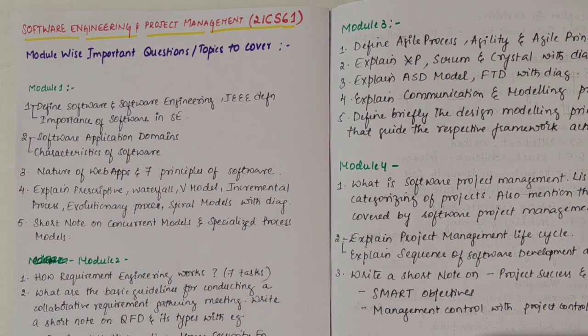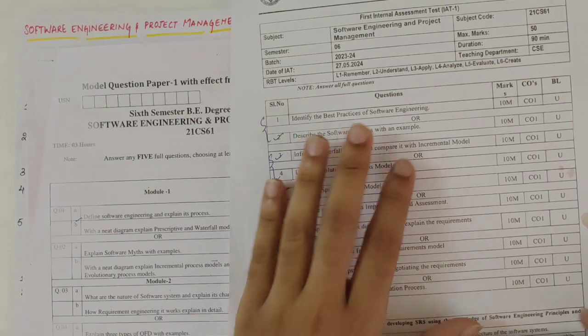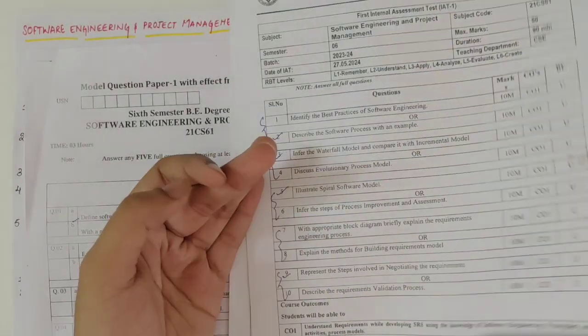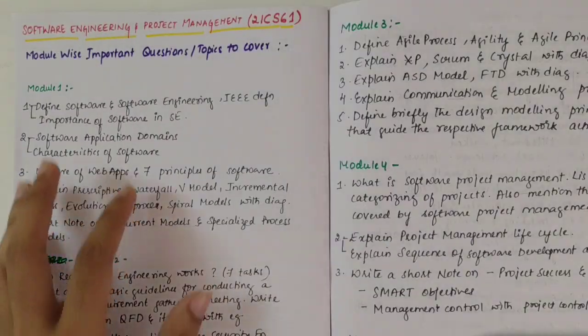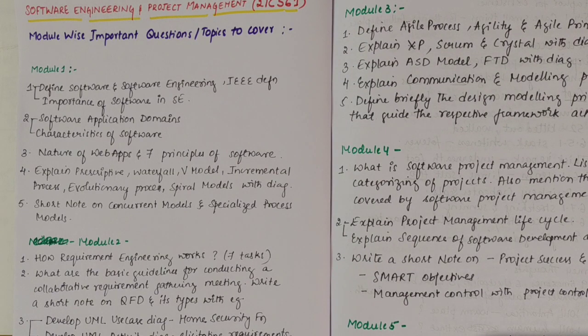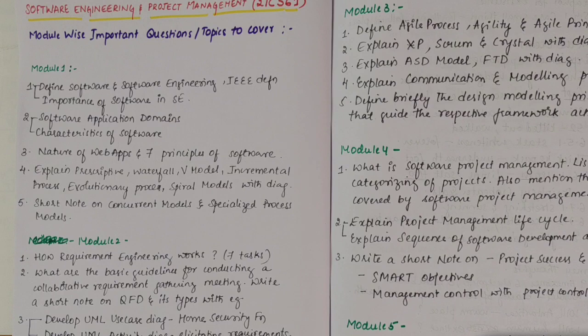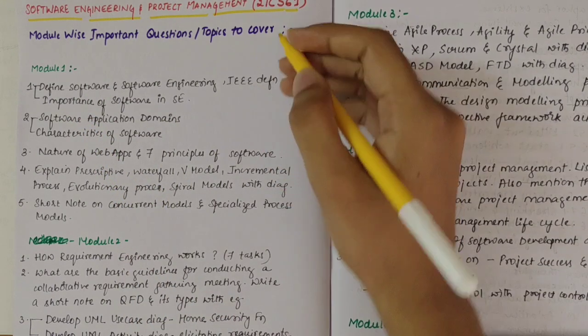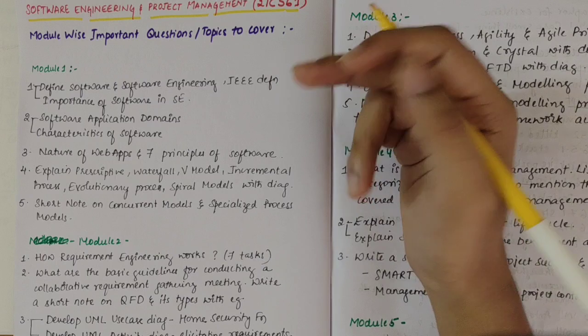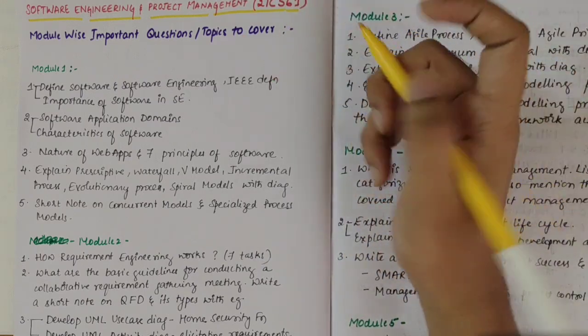So here I have the model question papers released by VTO and along with that I have also compared my internal question papers and have written down the important questions to cover. Starting from the first module: define software, software engineering IEEE definition and importance of software engineering. This could be asked for 10 marks with combination of 1A and 1B.